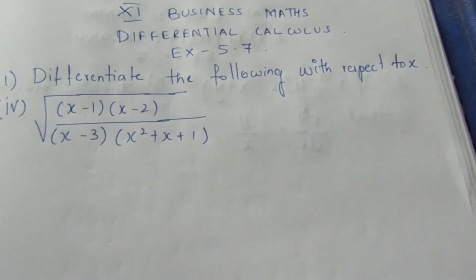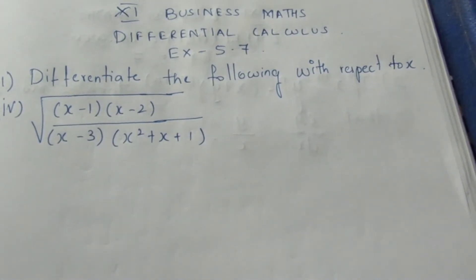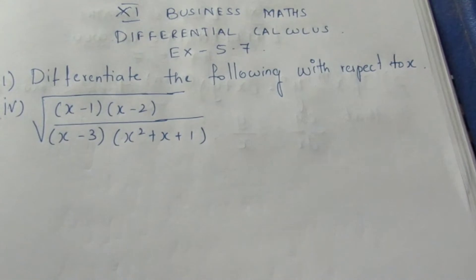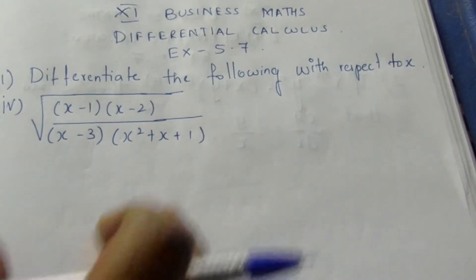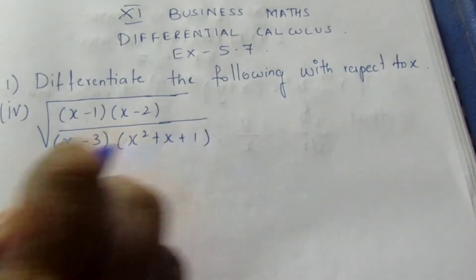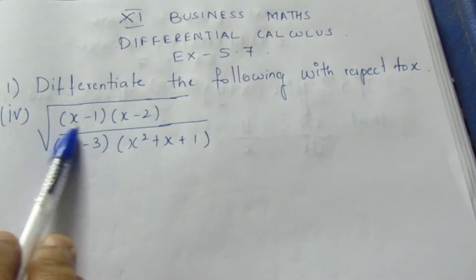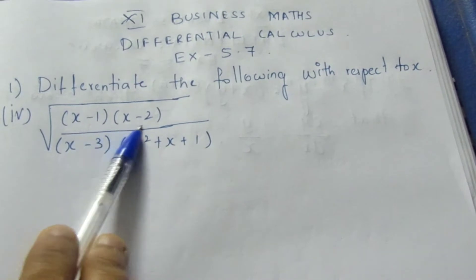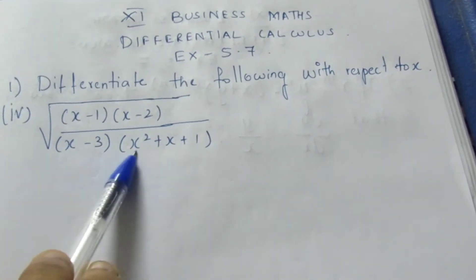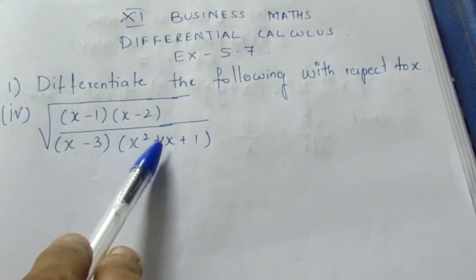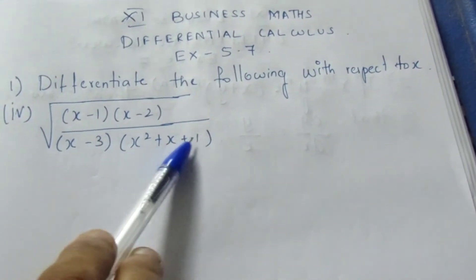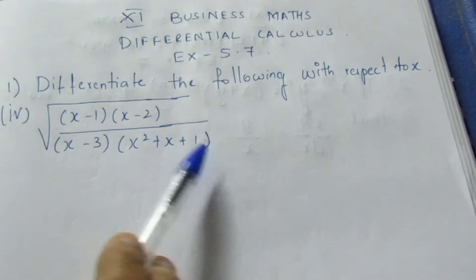The question is: differentiate the following with respect to x. The expression is the square root of (x minus 1) into (x minus 2) divided by (x minus 3) into (x squared plus x plus 1).